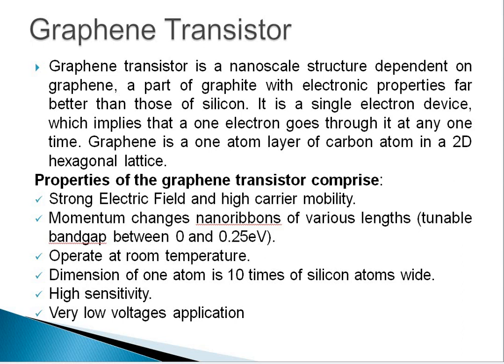Next is the graphene transistor. A graphene transistor is a nanoscale structure dependent on graphene — a part of graphite with electronic properties far better than those of silicon. It is a single-electron device, meaning one electron goes through it at any one time. Graphene is a one-atom layer of carbon atoms in a 2D hexagonal lattice. Properties of the graphene transistor include stronger electric field and higher carrier mobility. Momentum changes occur in narrow ribbons of various lengths due to the tunable band gap of graphene, which lies between 0 and 0.25 electron volts.